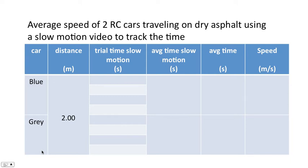You're going to go back to this video and play the part where the blue car is moving in slow motion. And you're going to record four trial times. Then you're going to go back and play the part where the grey car is moving in slow motion. Once again, four trial times.